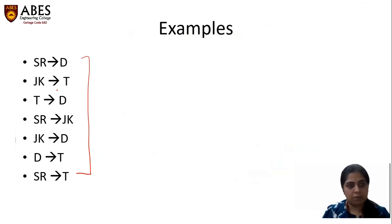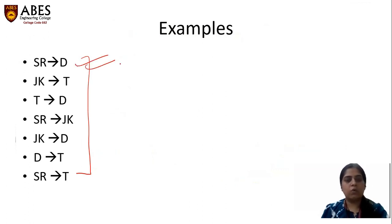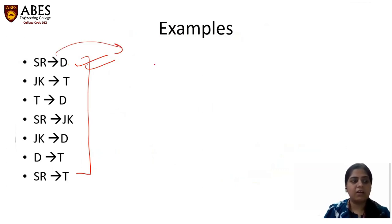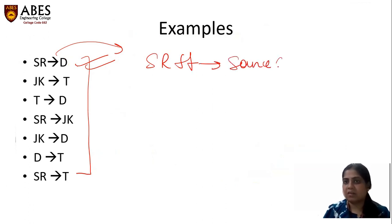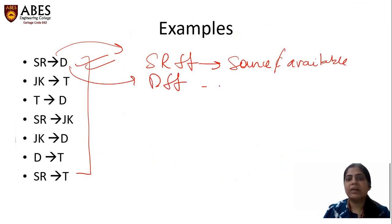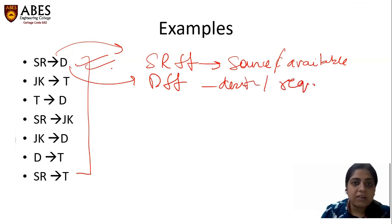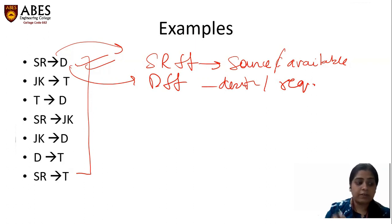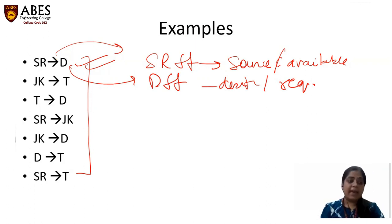So what is this conversion? For example, SR to D flip-flop. We are having the SR flip-flop in hand, so SR flip-flop is our source or available flip-flop, and D flip-flop is your destination or required flip-flop. So to convert the SR flip-flop to D flip-flop, we need some extra circuitry.